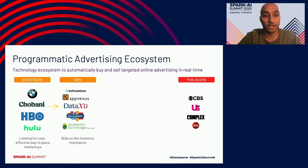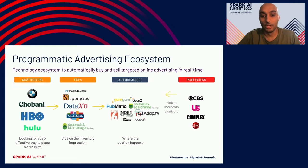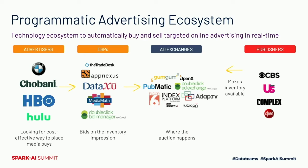All advertisers integrate with DSPs — demand-side partners — who participate in bids on behalf of the advertiser. All DSPs work with ad exchanges, and GumGum is one of the ad exchanges where the auction actually happens. During the auction, a publisher makes their inventory available, all the DSPs get to bid on that inventory, and whoever wins the bid gets to display the ad.